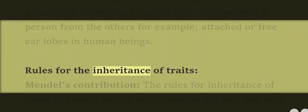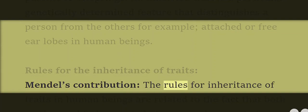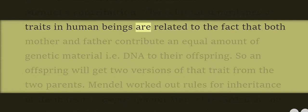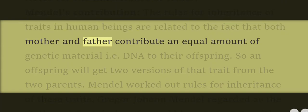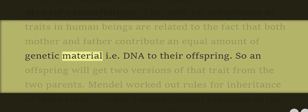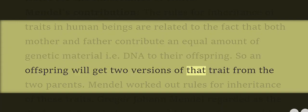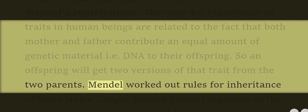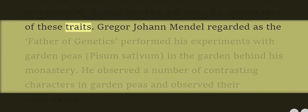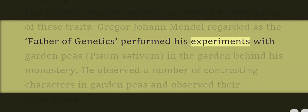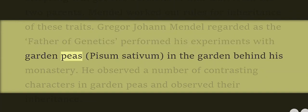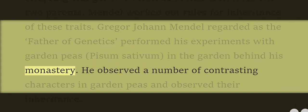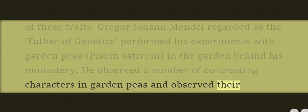Rules for the Inheritance of Traits — Mendel's Contribution. The rules for inheritance of traits in human beings are related to the fact that both mother and father contribute an equal amount of genetic material, i.e., DNA, to their offspring. So an offspring will get two versions of that trait from the two parents. Mendel worked out rules for inheritance of these traits. Gregor Johann Mendel, regarded as the father of genetics, performed his experiments with garden peas in the garden behind his monastery. He observed a number of contrasting characters in garden peas and observed their inheritance.